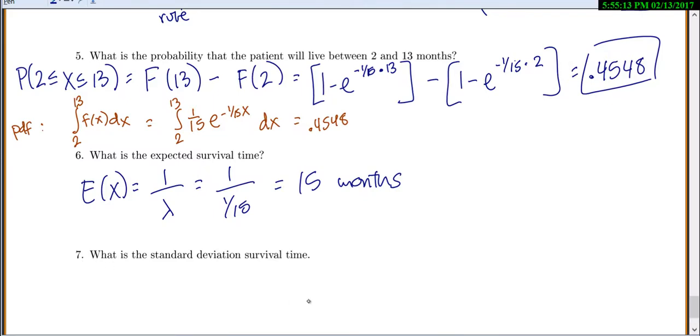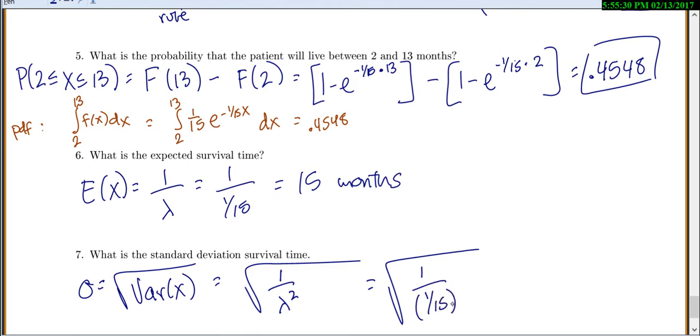And what is the standard deviation survival time? Well, if you're looking for standard deviation, you have to do square root of variance. So square root of our variance is 1 over lambda squared. So square root of 1 over, lambda is 1 over 15, square that. And you just get back to 15 months. So this is an interesting distribution because your expected value and standard deviation are always the same.